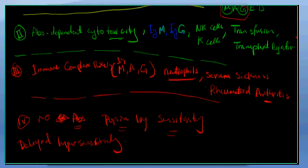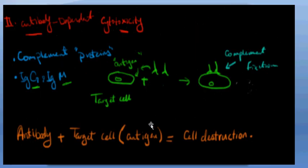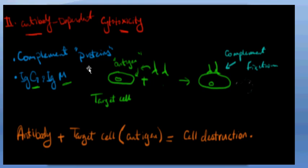Going back to class two, antibody-dependent cytotoxicity: you have an antibody attached to the target cell antigens. It's important to mention that complement proteins are also involved in the IgM/IgG cytotoxicity situation, and this leads to the destruction of your cells.